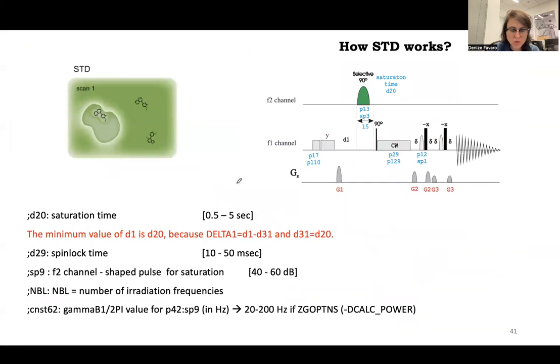This is how the experiment works. Some advice in terms of setup. So D20 in general we use from 0.5 to five seconds, but you can actually go up to 10 seconds of saturation if you want to check difference in intensity versus saturation time and build curves.